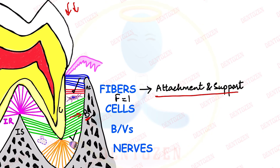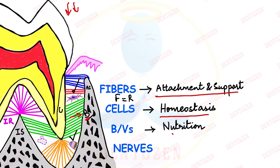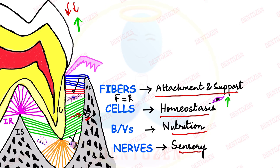There is always a balance between formation and resorption, and this balance is called homeostasis. Blood vessels in the PDL provide nutrition, and nerves provide sensory function. Also, fibroblast cells in the PDL have a contractile property — they can contract and generate forces which can help in the eruption of the tooth. That is the eruptive function of the PDL.